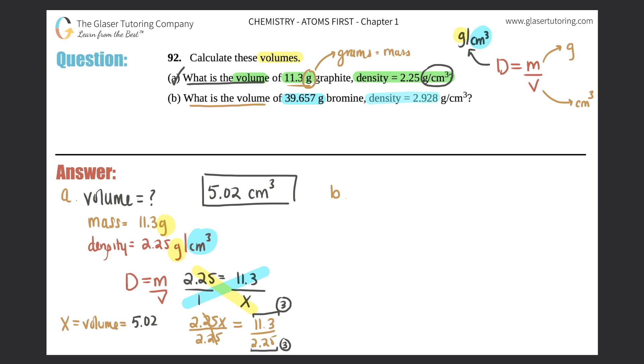Part b: what is the volume of 39.657 grams of bromine with density equals 2.928 grams per centimeter cubed? Once again, we're looking for the volume. We have a mass because I see g, which stands for grams - that's always a mass. So 39.657 grams, and the density equals 2.928 grams per centimeter cubed.